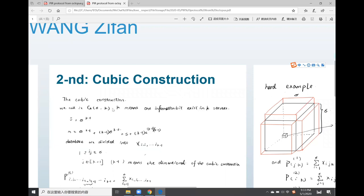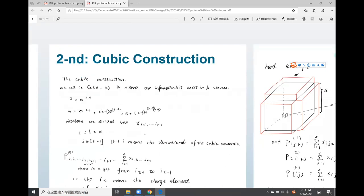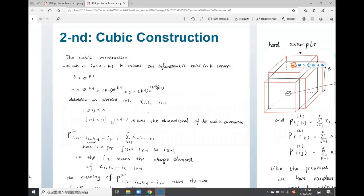The second way to construct PIR protocol is cubic construction. At first, we are going to define two variables, S and M.